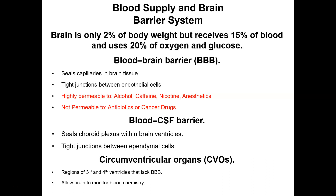Understanding the blood-brain barrier is important when considering medications. For example, Advil doesn't pass the blood-brain barrier so it doesn't make you drowsy or irritable. But Vicodin, Percocet, and those pain medications do pass it — that's why they give you vivid dreams and cause nausea and upset. Understanding what medicine can pass the blood-brain barrier will affect your patients and the side effects they experience.